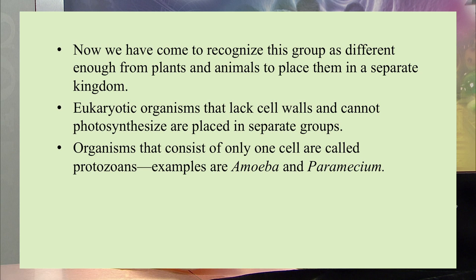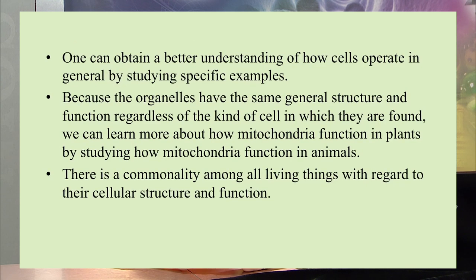Eukaryotic organisms that lack a cell wall and cannot photosynthesize are placed into separate groups. Organisms that consist of only one cell are called protozoans, like amoeba and paramecium. Because organelles have the same general structure and function regardless of the cell type in which they are found, we can learn about how mitochondria function in plants by studying how they function in animals — showing common features among all living organisms.